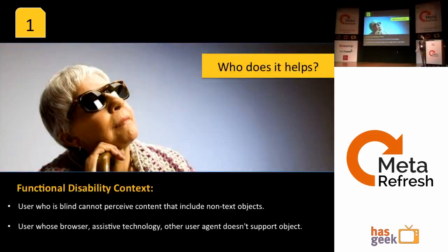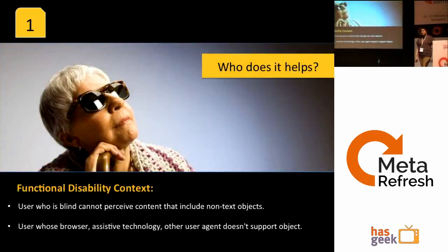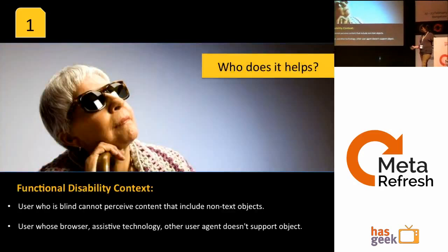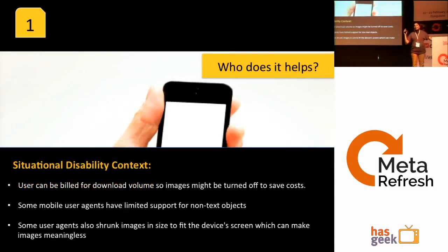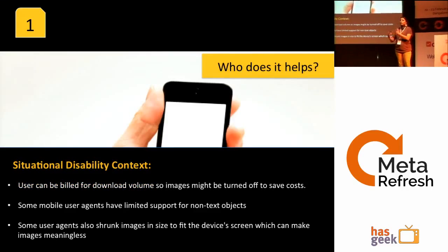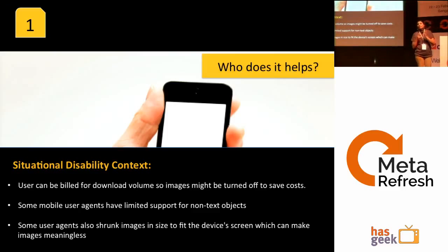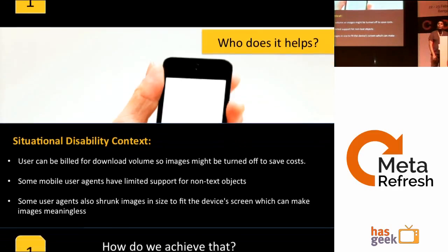Who does descriptive text help? It helps people who are blind and those who use assistive technology. At the same time, it helps people in situational disabilities — for example, some people turn off images on mobile because loading images uses data and you may be charged. Also, some browsers don't support certain image sizes, so problems arise.